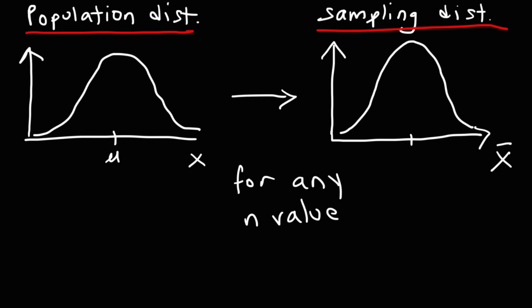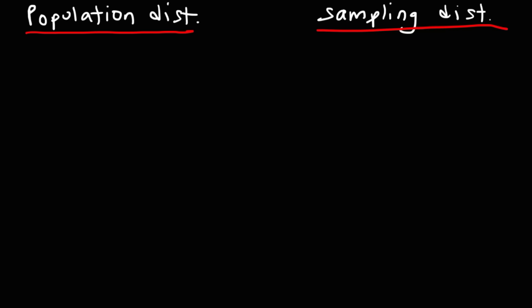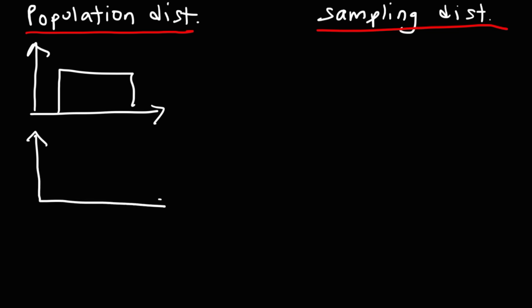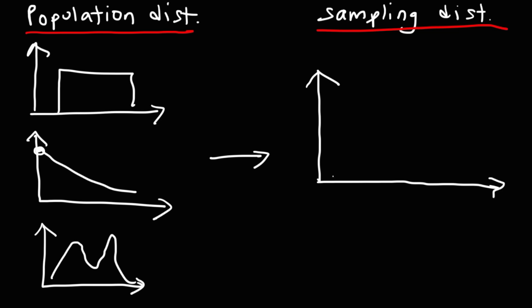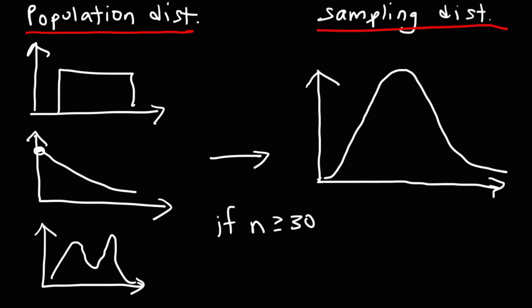But what if the population distribution had a different shape — like a uniform distribution, an exponential distribution, or some unusual distribution? If we collect samples, calculate their means, and plot them, we get the sampling distribution of the sample means. If n is large enough — greater than or equal to 30 — the sampling distribution will approximate a normal distribution, regardless of the population's shape.